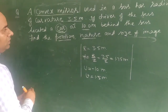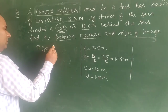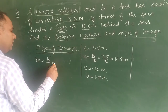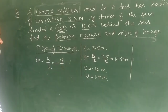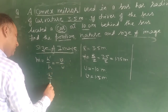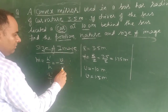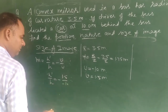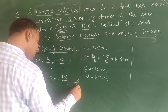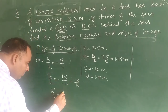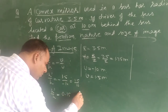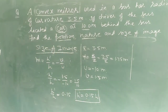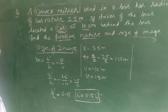Now let us find the size of the image. Magnification equals size of image divided by size of object, and this equals v upon u. The value of v is positive 1.5 meters and u is minus 10 meters. So magnification equals 1.5 divided by 10, which gives h'/h equal to 0.15. Therefore the size of the image is 0.15 times the size of the object, meaning the image is diminished — smaller in size.